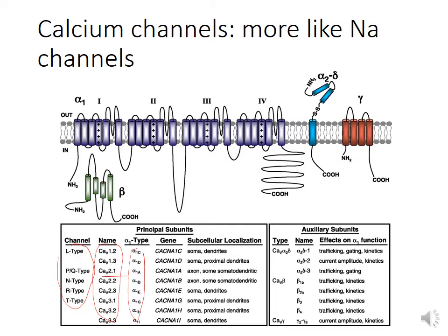Likewise, for the accessory subunits, there is some diversity in terms of alpha 2 delta 1, alpha 2 delta 2, alpha 2 delta 3, beta 1, 1b, 2a, and so on. Each one of these polypeptides is encoded by a different gene.